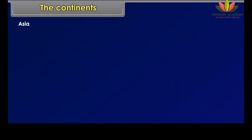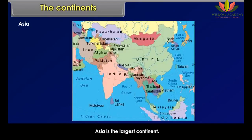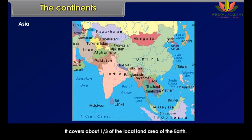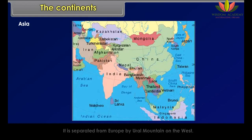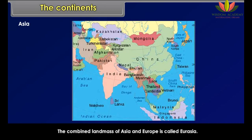Asia is the largest continent. It covers about one-third of the total land area of the earth. Asia lies in the eastern hemisphere. It is separated from Europe by the Ural Mountains on the west. The combined land mass of Asia and Europe is called Eurasia.